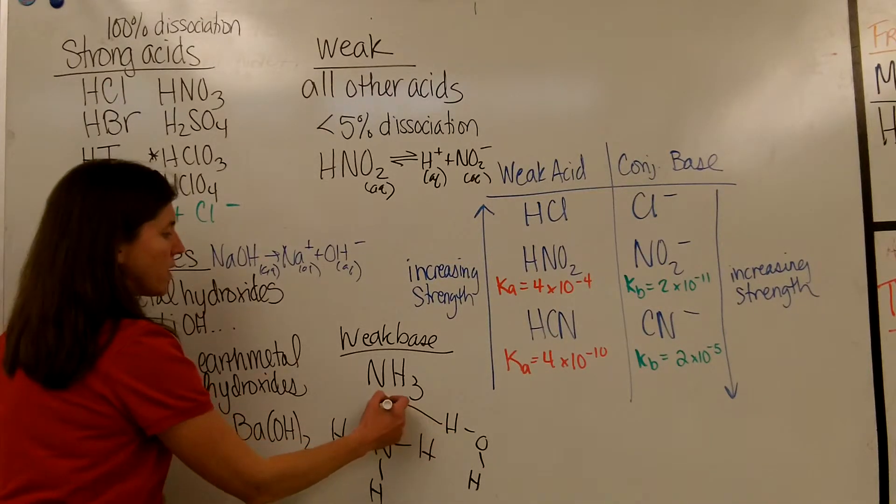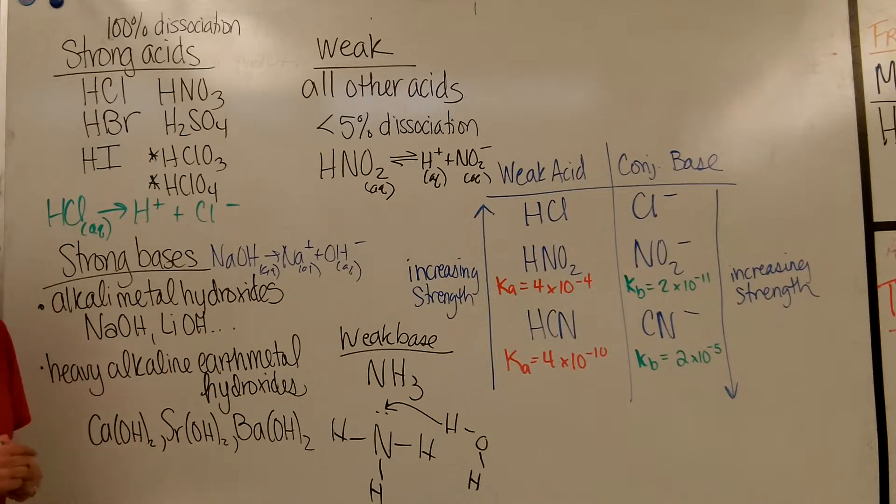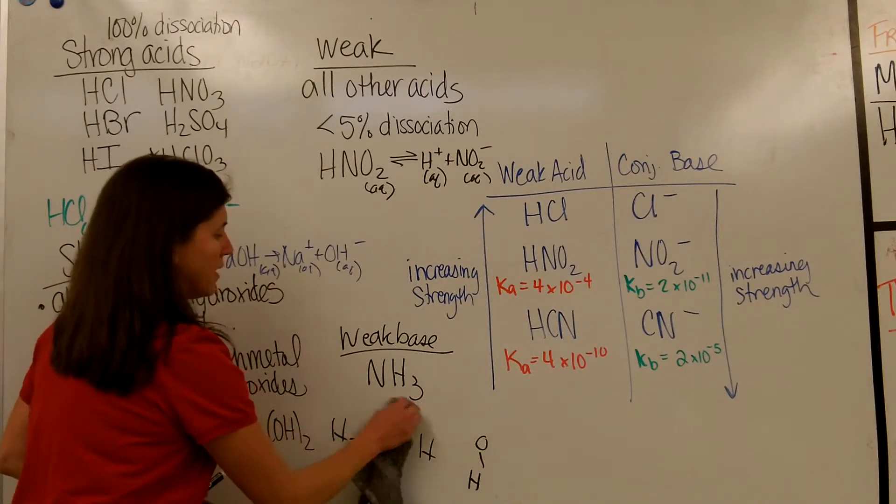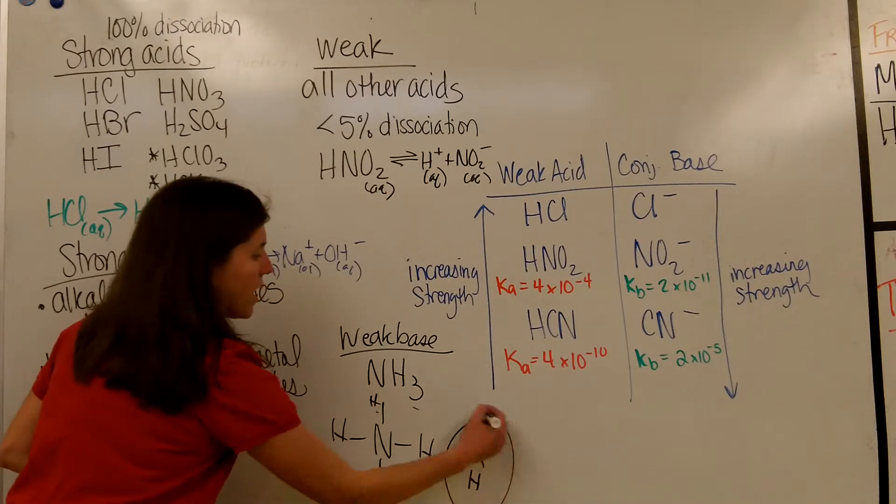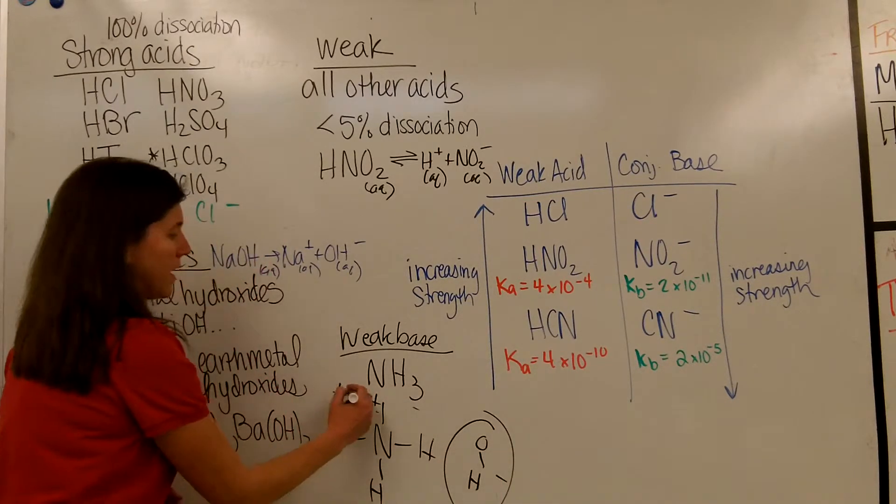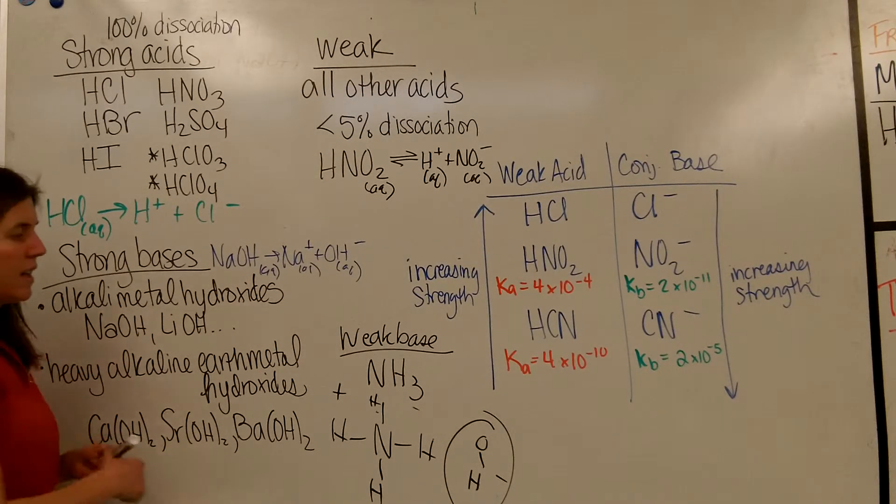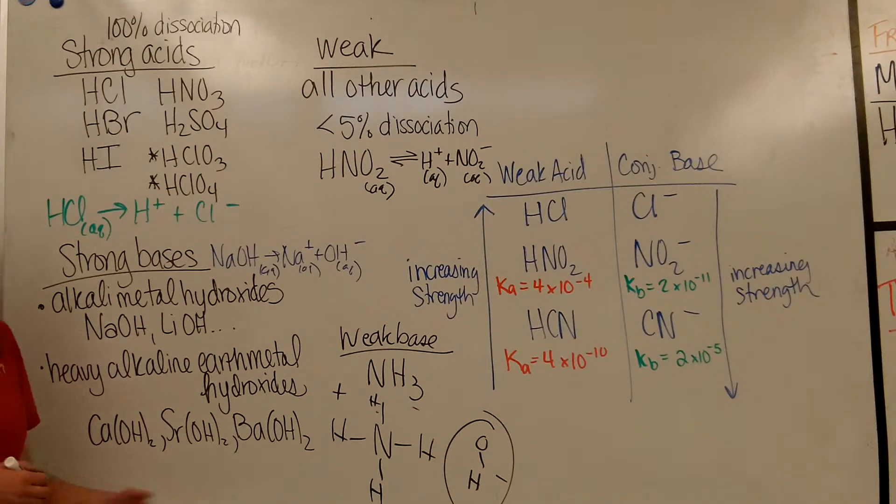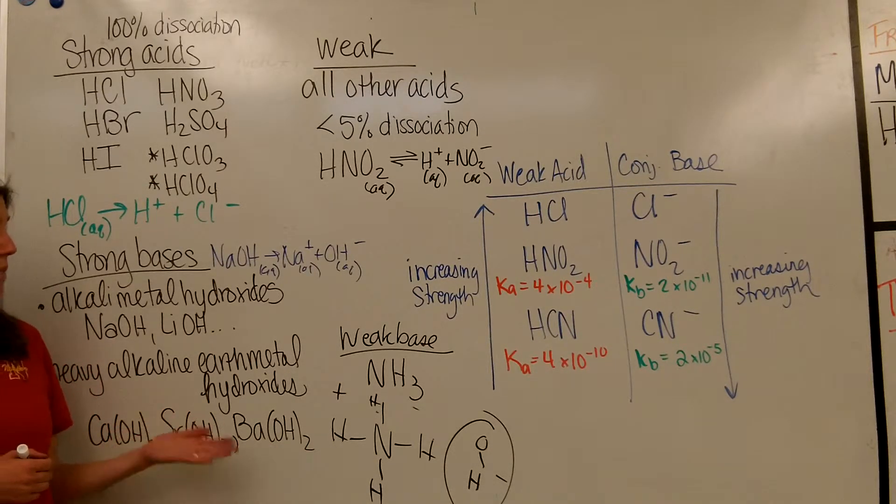So when you stick NH3 in a solution of water, it is going to come along and is going to steal that hydrogen from the water. And when you take a hydrogen from water, if you look at what's left behind, if I remove this hydrogen and put it over here, now I have a hydroxide ion. So your NH3 will take a hydrogen from water, leaving behind hydroxides, and creating NH4+, which we call the conjugate acid of that weak base.